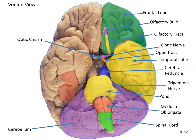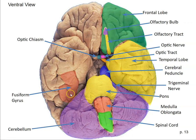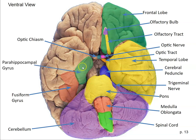Next we're going to look at some structures on the ventral part of the temporal lobe. Here's the fusiform gyrus — remember, a gyrus is an outward fold of the cortex, with a sulcus on either side. We'll learn about the fusiform gyrus later; it contains an area known as the fusiform face area, which tends to be central in recognizing faces. We'll learn about that later in the vision chapter.